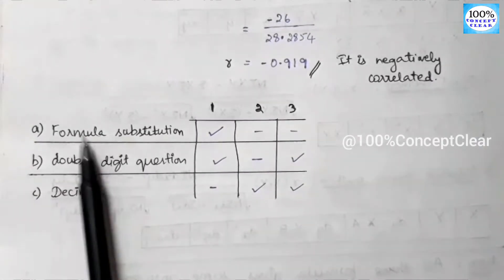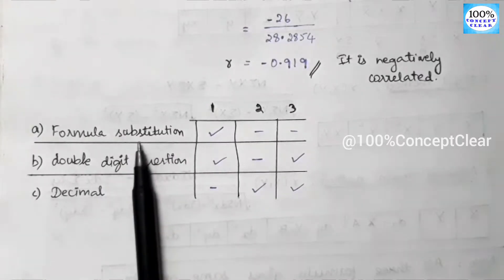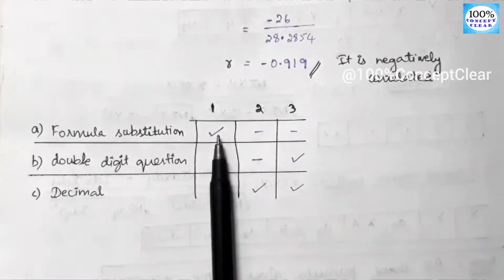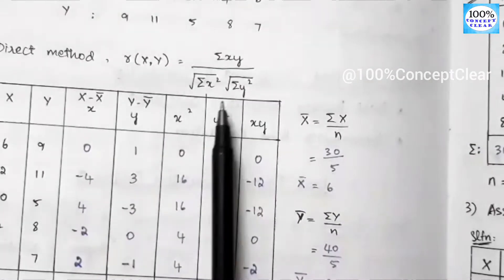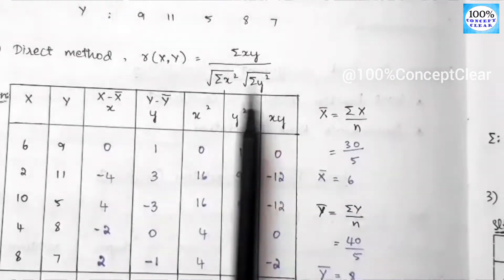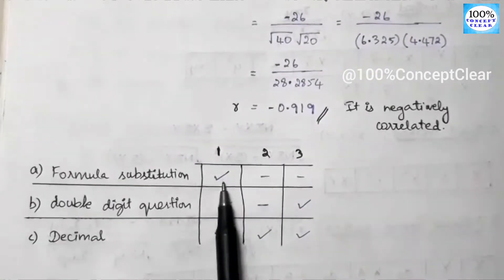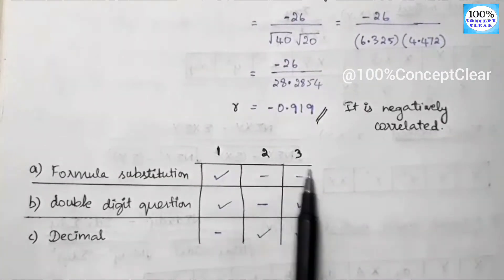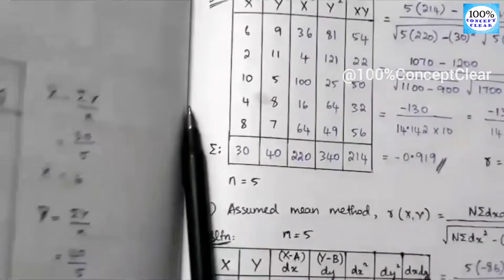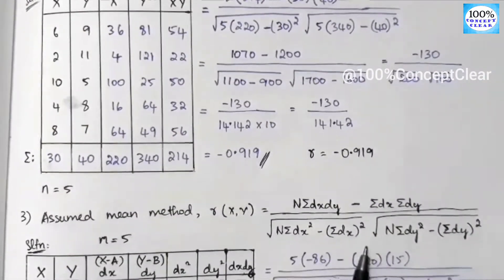The first one is formula substitution. We can use the first formula to make an easy answer, or we can use a small formula. The next is the second and third formula — we have different formulas, so that's why we can memorize this formula.